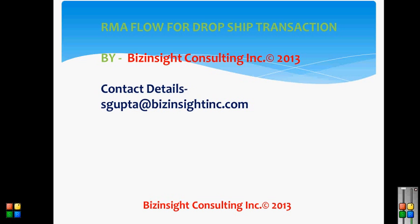In such a case, we raise a purchase order with one of our vendors, and the vendor ships the product directly to the customer and sends us an Oracle Payables invoice. On the order management side, as soon as the vendor informs us that he has directly shipped the product to the customer, we do a logical receiving transaction in our logical inventory and then progress the workflow for invoicing and send the invoice to the customer.